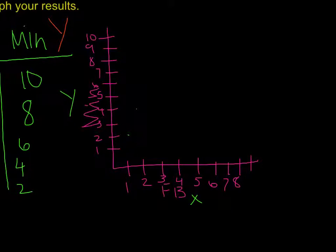The next one was 3, 6, which goes here, then I had 4, 8, which goes here, and then I had 5, 10, which goes right about here.